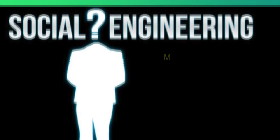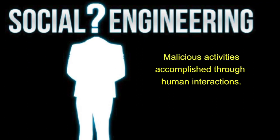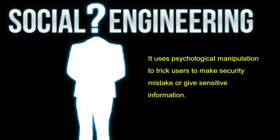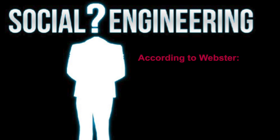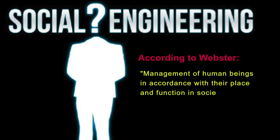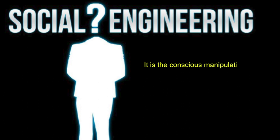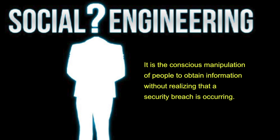Social engineering is a term used for a broad range of malicious activities accomplished through human interactions. It uses psychological manipulation to trick users into making security mistakes or giving away sensitive information, with or without the use of technology. According to the Webster dictionary, social engineering is the management of human beings in accordance with their place and function in society — applied social science. It is the conscious manipulation of people to obtain information without the victim realizing that a security breach is occurring.